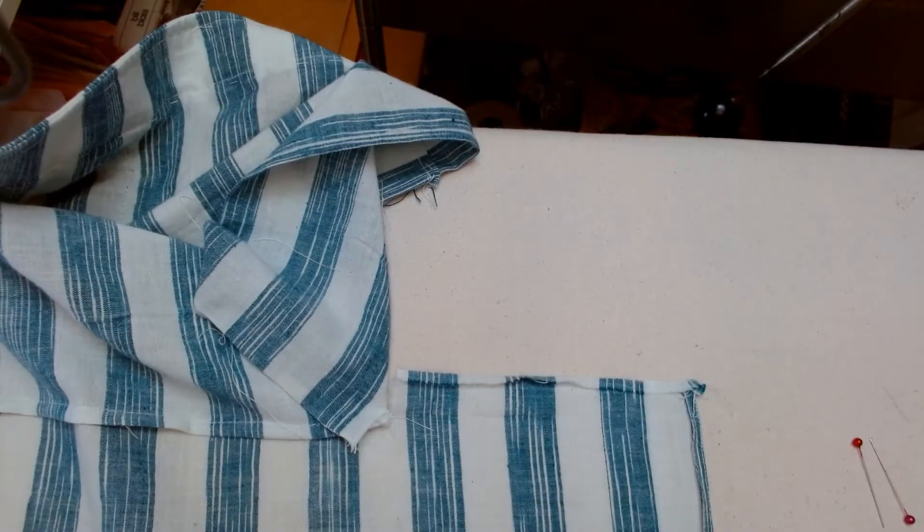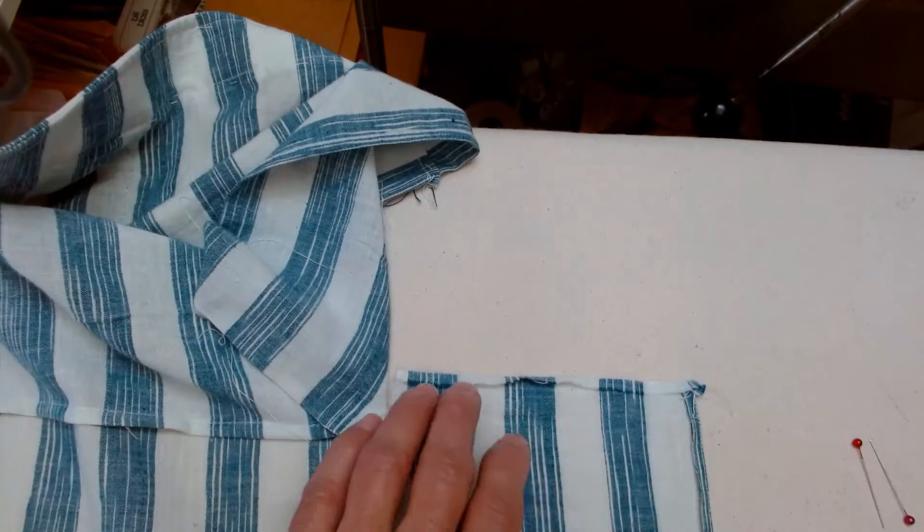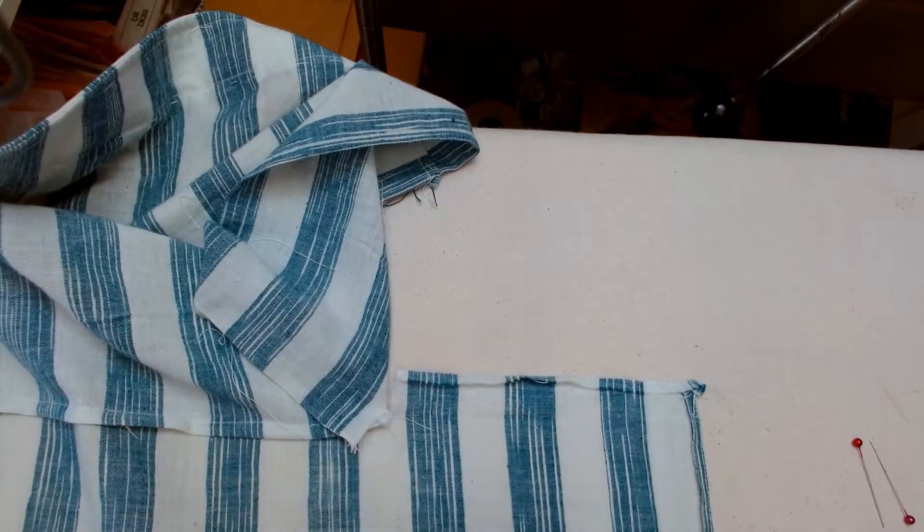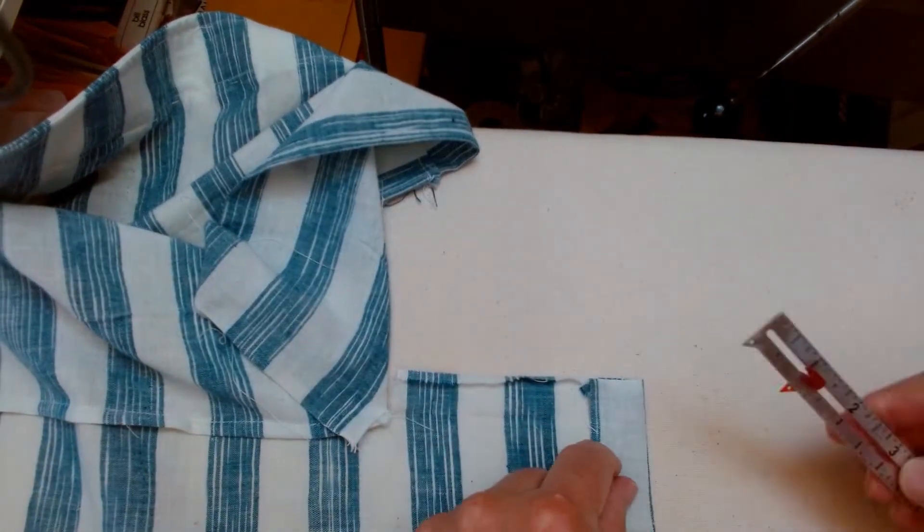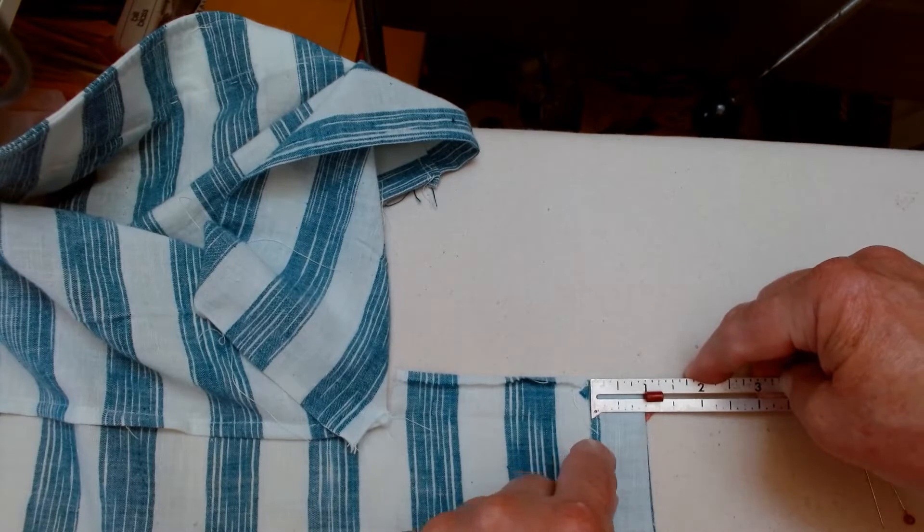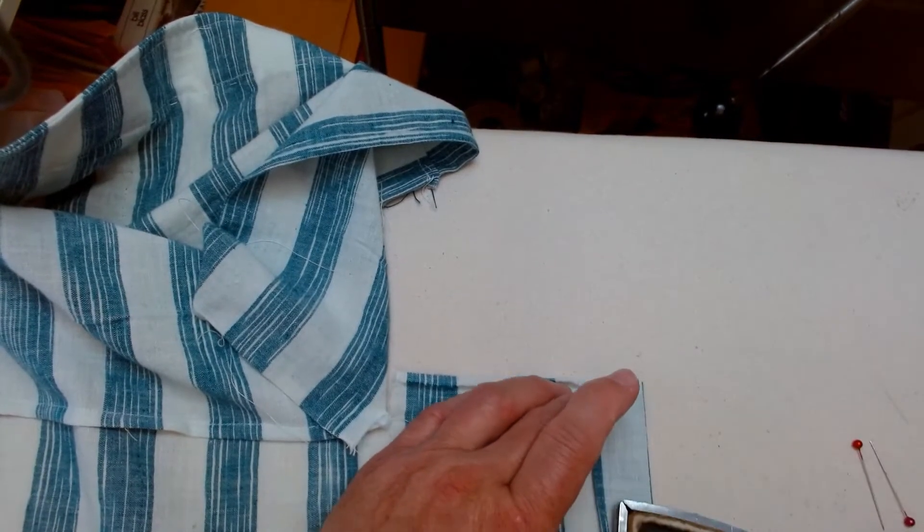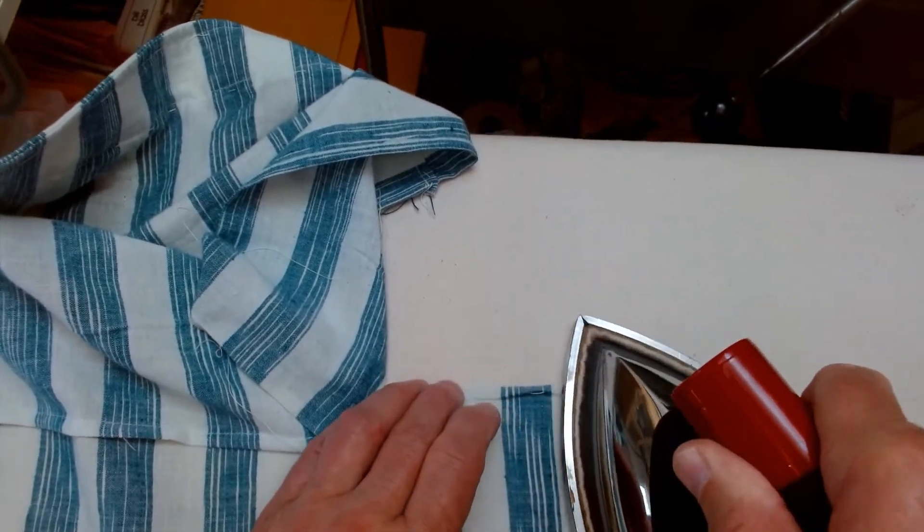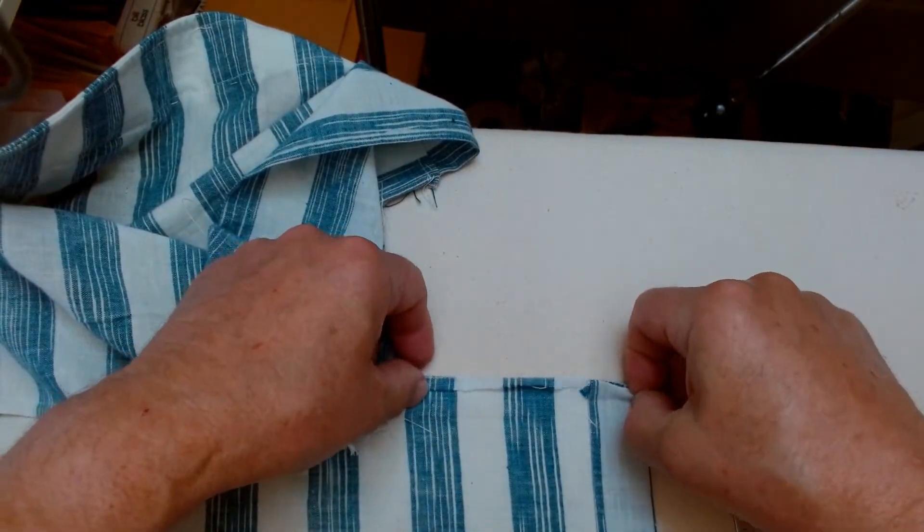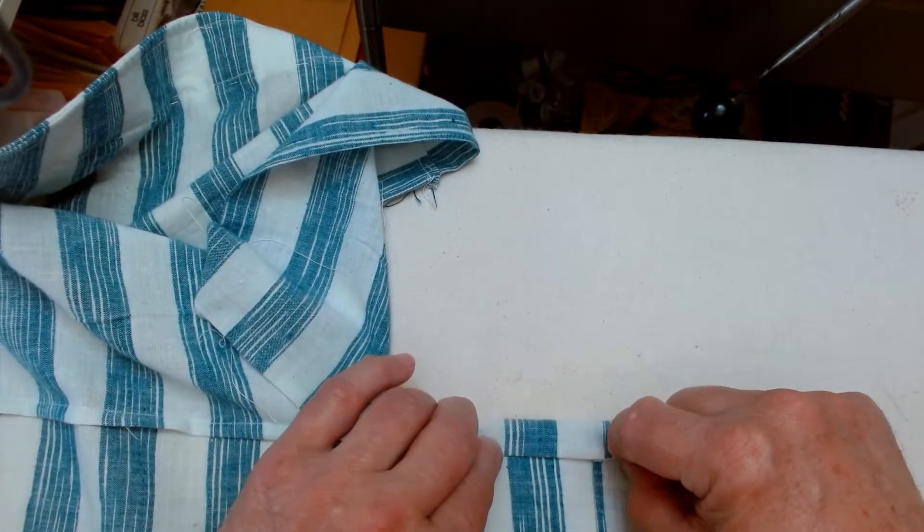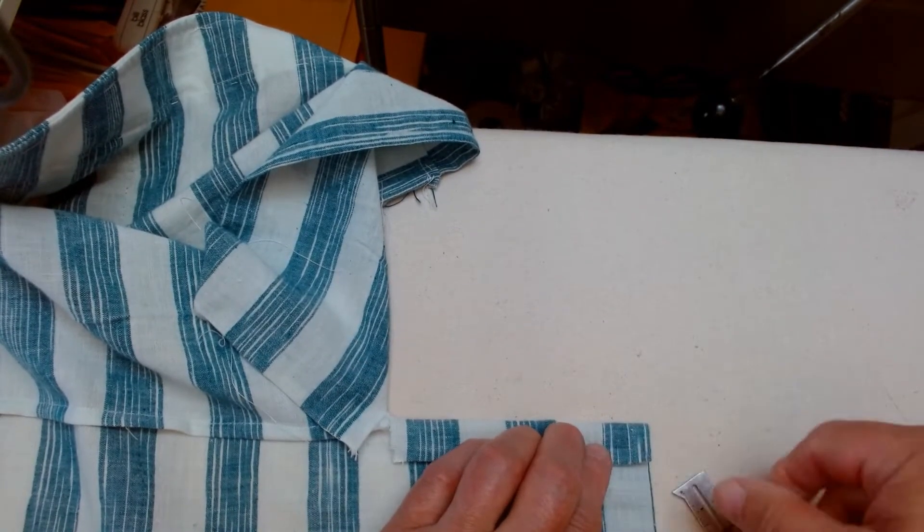If you recall, way back when we started this, the hem was going to be one inch and the vent was going to be three. So I'm going to go ahead and press up the hem at one inch here, give it some steam, and then the vent is going to get folded back three quarters, just like that.